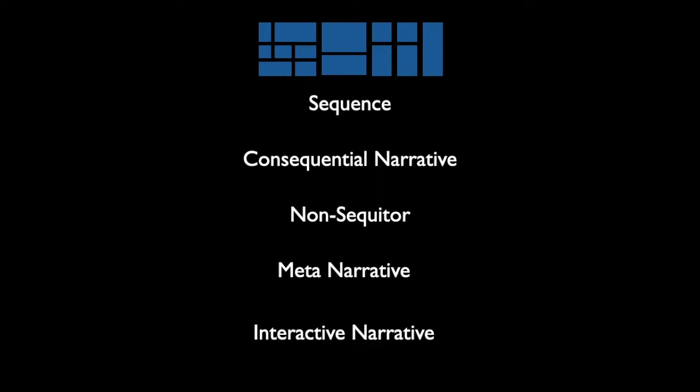We're going to look at ways in which we can take out the meaning implied in sequential narratives with the non-sequitur, or we can subvert the idea of the narrative by inserting different or conflicting ideas in the text. And lastly, the way the sequence can be manipulated by the reader in the interactive narrative.